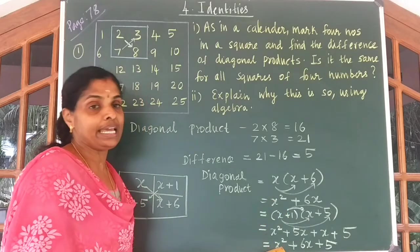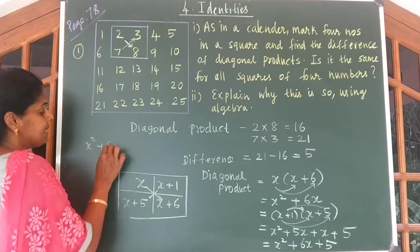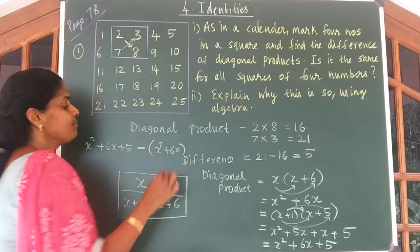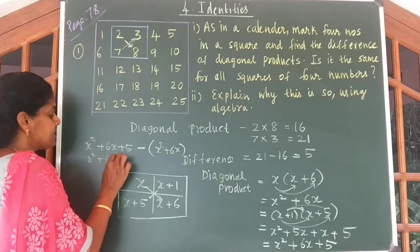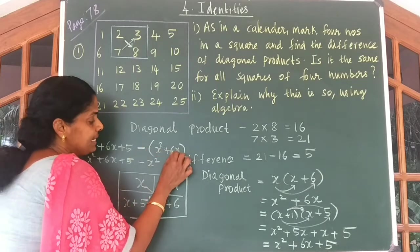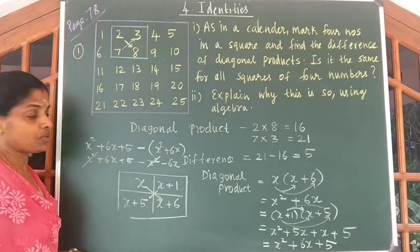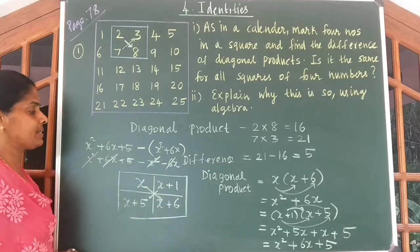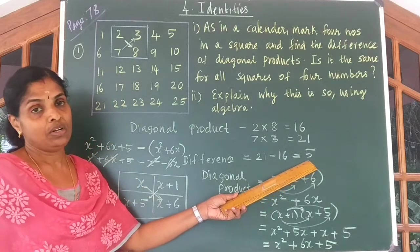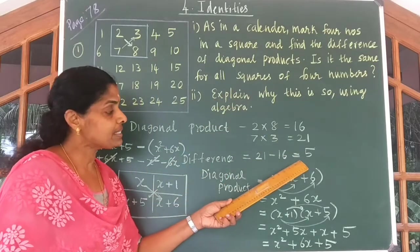Now find the difference between these 2. You get (x squared plus 6x plus 5) minus (x squared plus 6x). x squared plus 6x plus 5 minus x squared gives minus x squared; minus into 6x gives minus 6x. Plus 6x cancels with minus 6x, so what is remaining? We get back 5. So when you find the difference of diagonal products in this problem, you always get 5.